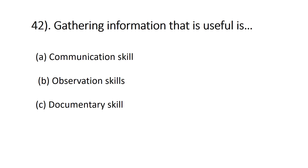Question forty-two: gathering information that is useful is — A) communication skill, B) observation skill, C) documentary skill. Through observation you can gather information which is useful for investigation, detecting crime, or any misbehavior. The correct answer is observation skill.